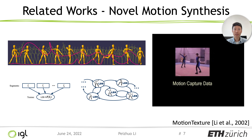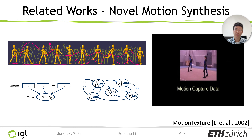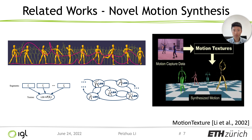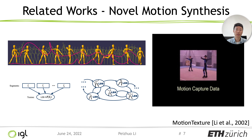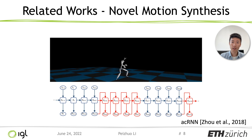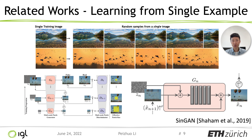Let's briefly review some existing literature. Motion Texture clusters a large training dataset into textons, which are linear dynamic systems capturing local variation, and models transition probabilities between them. Though the goal resembles ours, it is still a data-hungry statistical model. The neural network-based approach ACRNN tackles novel motion synthesis and addresses error accumulation for long-term generation, but is also meant to be trained on large datasets. Shaham and colleagues propose SinGAN, which learns to generate random samples from a single image using a coarse-to-fine, patch-discriminator-based model — and we take inspiration from this work for our Ganymator.